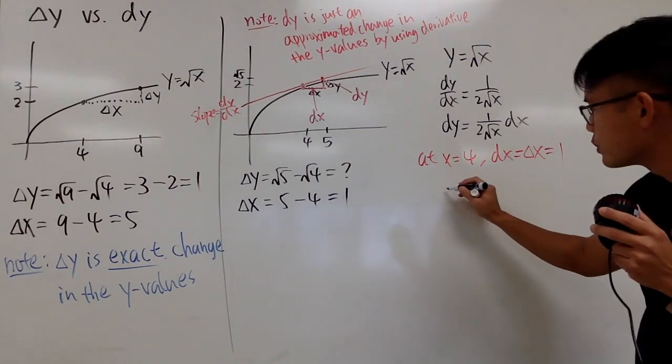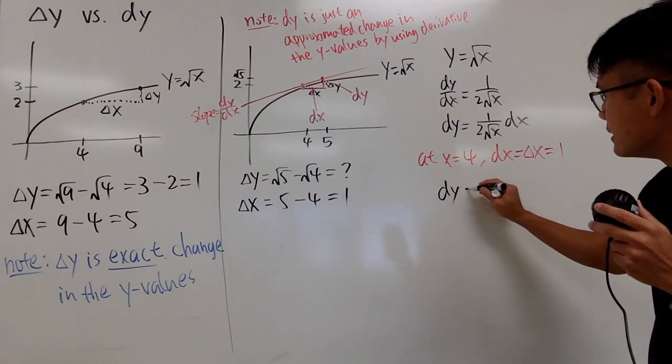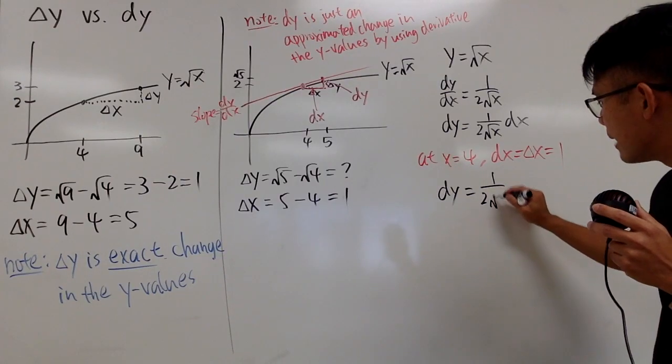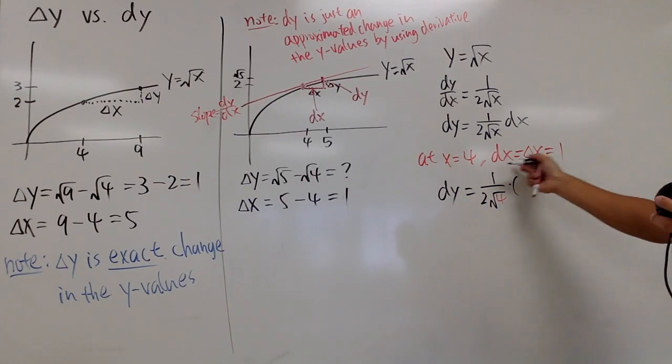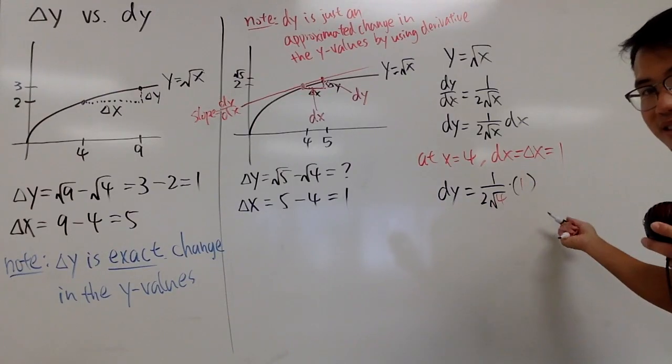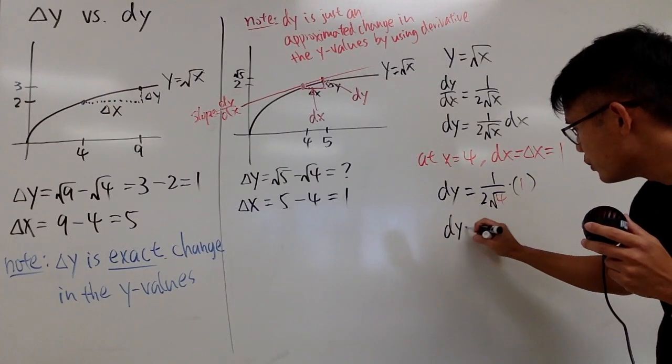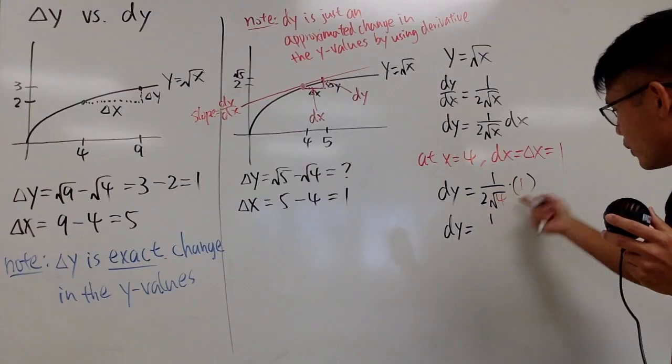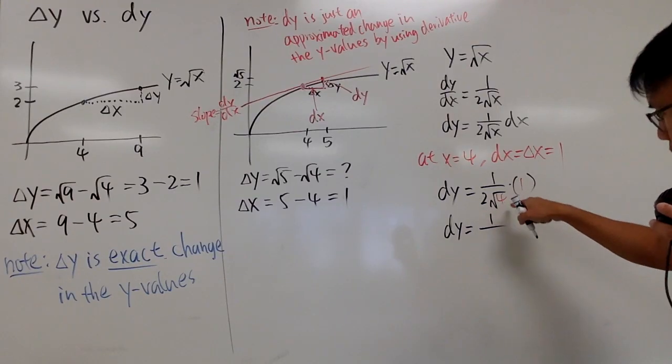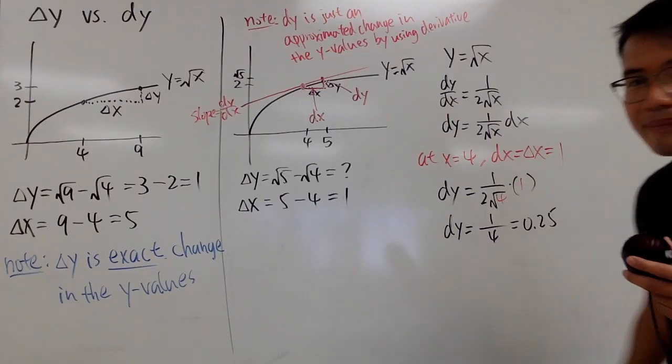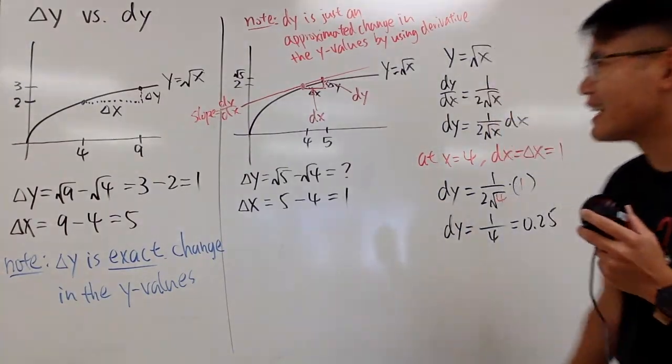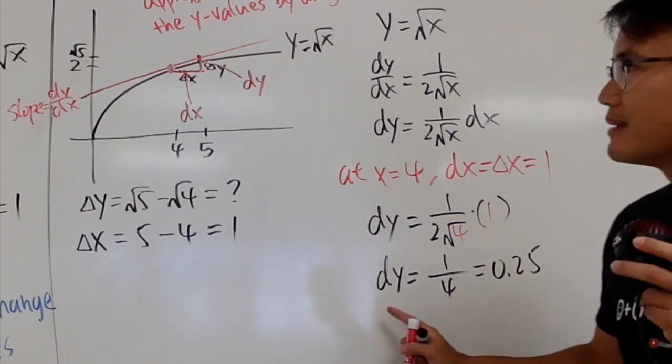And then from here, of course we can plug 6 in. dy is equal to 1 over 2 times square root of 4 times the dx, which is 1, like this. And we can just work this out real quick. This is 1 times 1, which is 1, over 2 times 2, which is 4. And this is 0.25. So what exactly is this then? This is telling me that, okay, originally the y value was at 2, but we went up by 0.25. So this is 2.25.